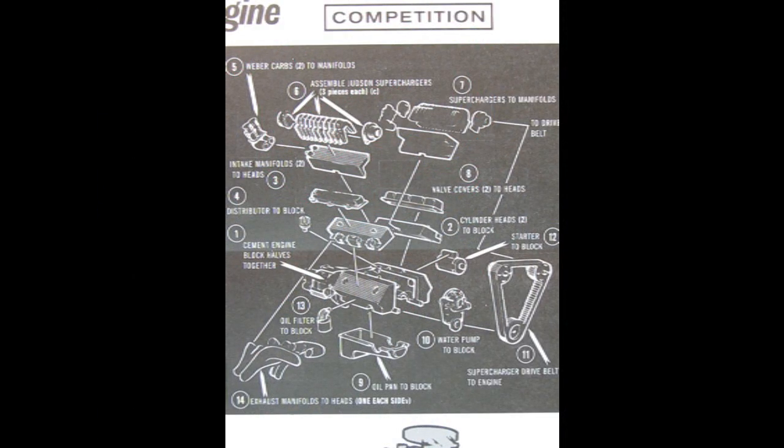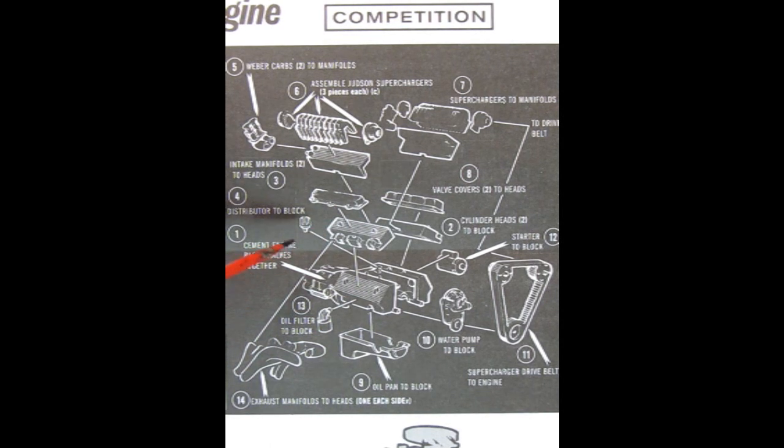And if the stock version of the engine is not powerful enough for you, we have the competition version with the Weber carbs. We have the three piece Judson superchargers here, a dual set, intake manifolds, valve covers, cylinder heads, the distributor, the right and left hand side engine block.